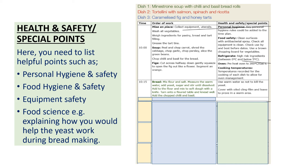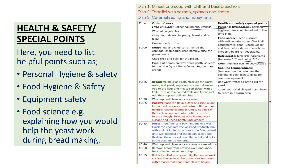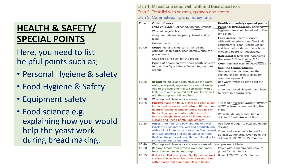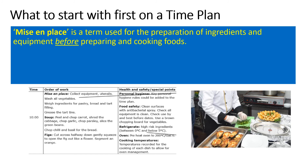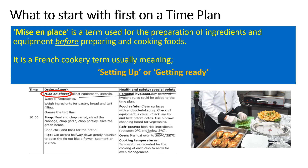Then for the bread stage they've put: used warm water so as not to kill the yeast — that's food science right there — and covered it with oiled cling film and left it to prove in a warm area to get the yeast going. It shows they understand all those areas of bread making. At 10:20 washed up and cleaned surfaces — your three different columns showing this process of how it works, and this is how you're going to do it with your chili con carne.